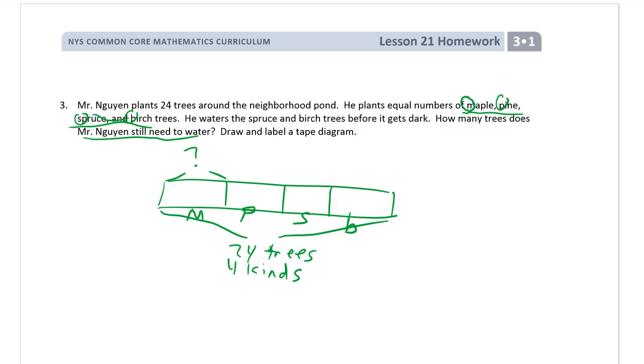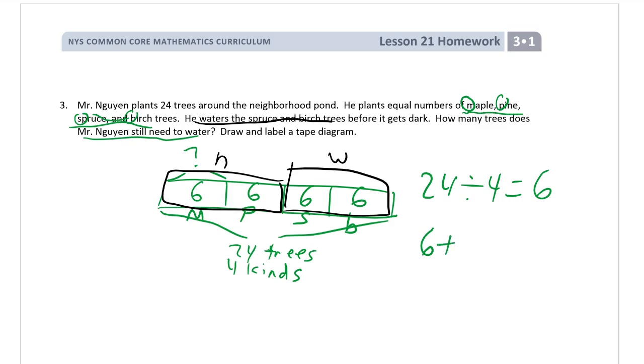We have to figure out how many of each kind of tree there are. 24 total trees divided by 4 kinds of trees. 6 trees of each kind. So we have 6s in here. Now we're going to use the tape diagram. So which ones are watered? The spruce and the birch trees are watered. These ones are watered. And these ones, he still needs to water. So, that's 2 sixes. 6 plus 6 is 12. He still needs to water 12 trees.